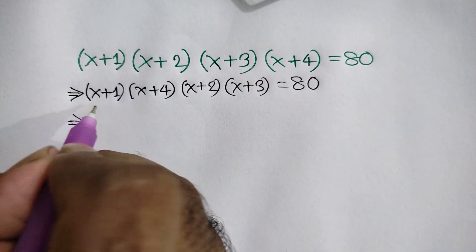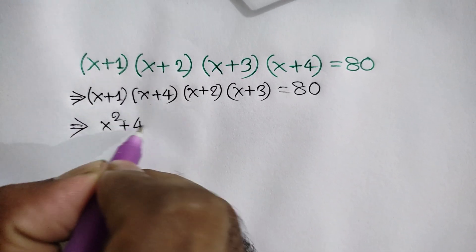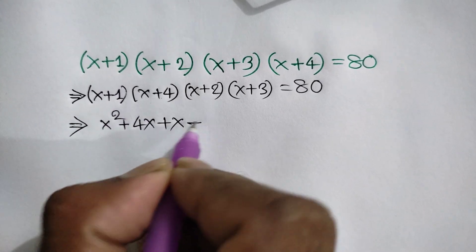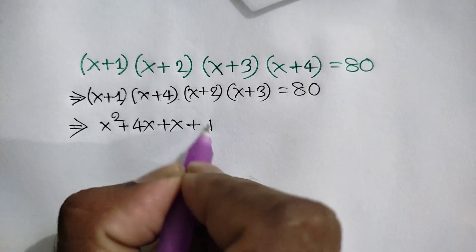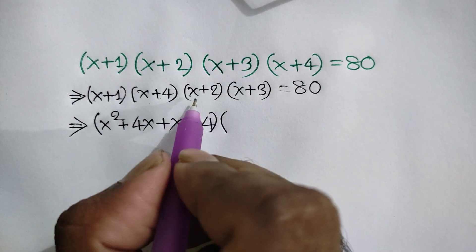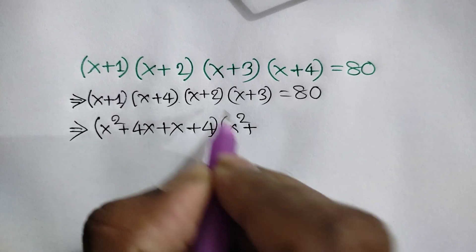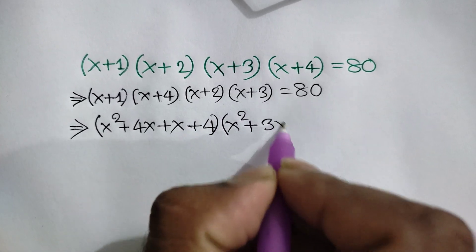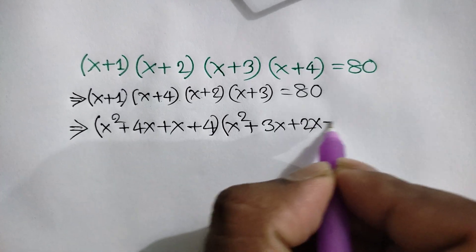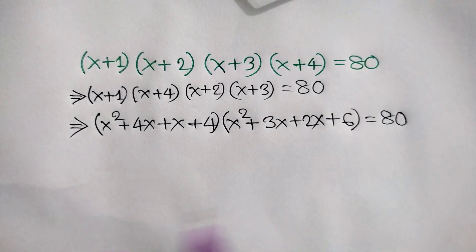Multiplying the first two terms: x·x is x², x·4 is 4x, 1·x is x, and 1·4 is 4. Multiplying the last two terms: x·x is x², x·3 is 3x, 2·x is 2x, and 2·3 is 6. This is all equal to 80.